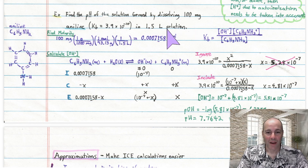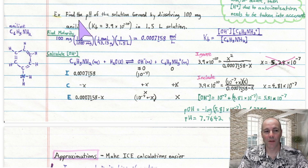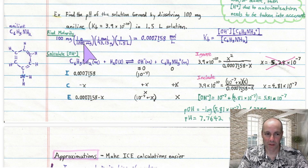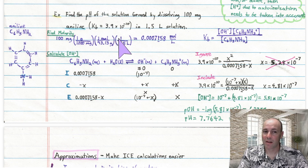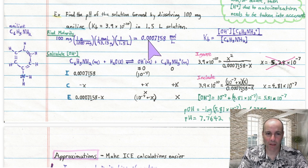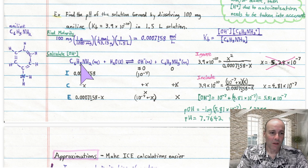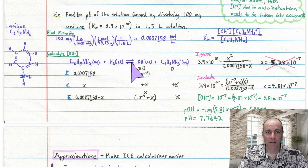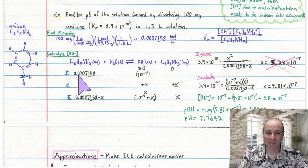Let's see that we do have to include the autoionization of water this time. First, find the molarity of aniline: take 100 mg, convert to grams, then convert to moles using aniline's molar mass, then divide by 1.5 liters of solution. The initial molarity of aniline comes out to 0.00071 M. Here is the chemical equation: aniline accepts a proton to produce hydroxide and protonated aniline (anilinium). The initial concentration of aniline is 0.00071 M.